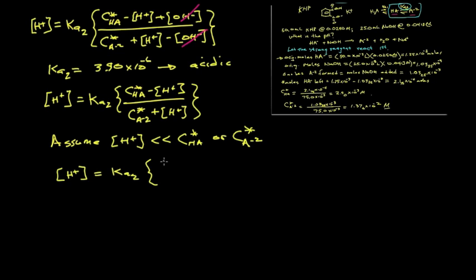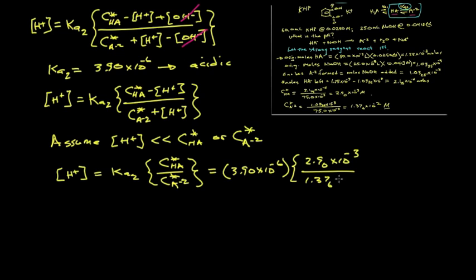Just the ratio of analytical concentrations times the Ka value should give us a good value for hydrogen ion concentration. So 3.9 times 10 to the minus 6 times the ratio of HA, which is 2.9 times 10 to the minus 3 divided by 1.376 times 10 to the minus 2 molar. That gives us 8.21 times 10 to the minus 7. Indeed, our assumption was good.